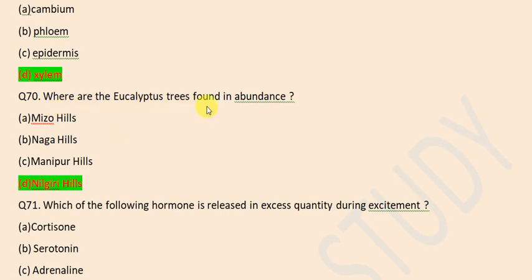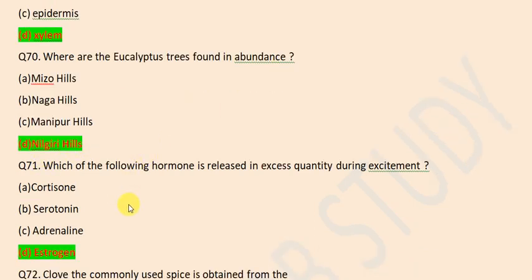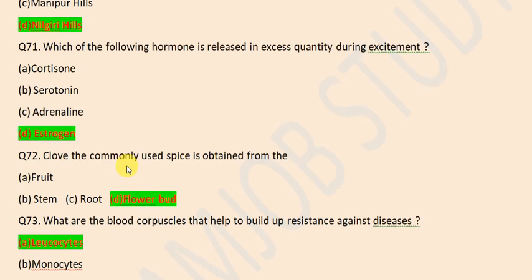Where are the eucalyptus trees found in abundance? Nilgiri Hills. Which of the following hormones is released in excess quantity during excitement? Adrenaline.